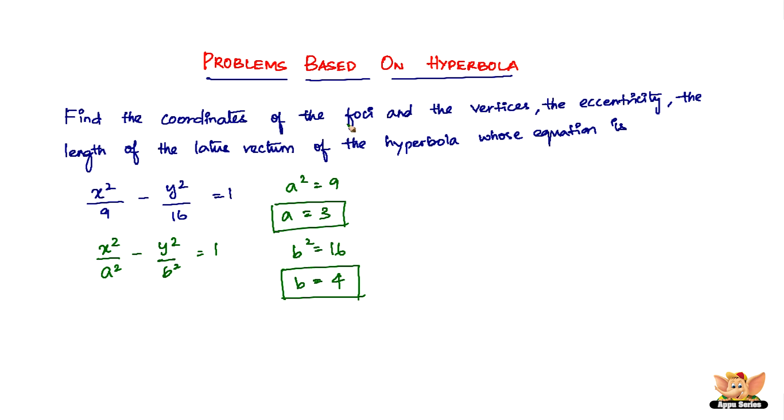But we need to find the coordinates of the foci which involves c. So we need to find c. We know that b equals square root of c squared minus a squared. So if we can find c from squaring both sides, we get b squared equals c squared minus a squared. Or c squared equals a squared plus b squared. So c squared equals 9. A squared is 9 plus b squared is 16. So we have c squared equals 25. Therefore, c equals 5.